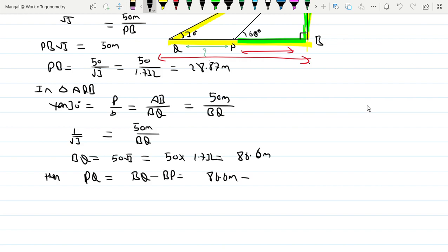PQ equals BQ minus BP, so 86.6 meters minus 28.87 meters equals 57.73 meters. Therefore the distance between those two observing points is 57.73 meters.